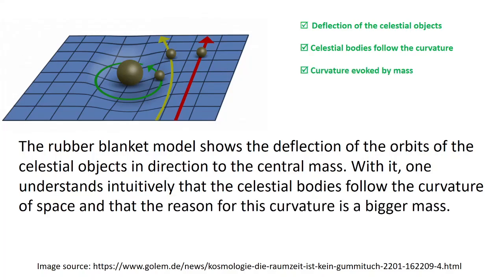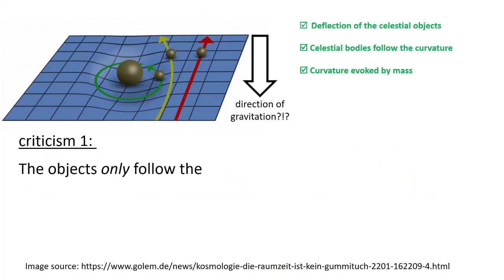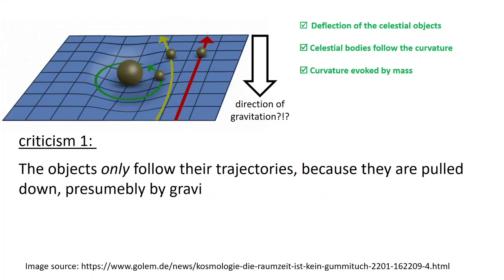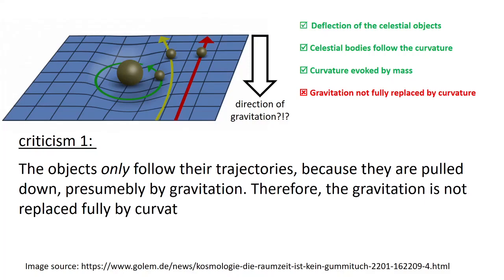However, there are some points that can be criticized. The objects only follow their trajectories because they are pulled down, presumably by gravitation. Therefore, the gravitation is not replaced fully by curvature in the rubber blanket model.